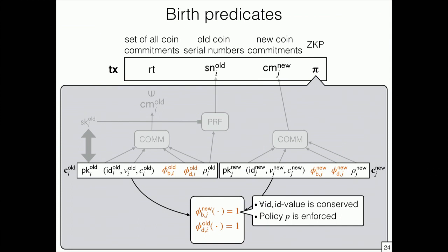We now also enable a birth predicate, which users can use to enforce arbitrary conditions at the time of coin creation. For example, you could enforce value preservation but also arbitrary policies like a whitelist or blacklist. Since the death predicate is left free, you can still set it to phi-exchange, making this compatible with our private DEX.